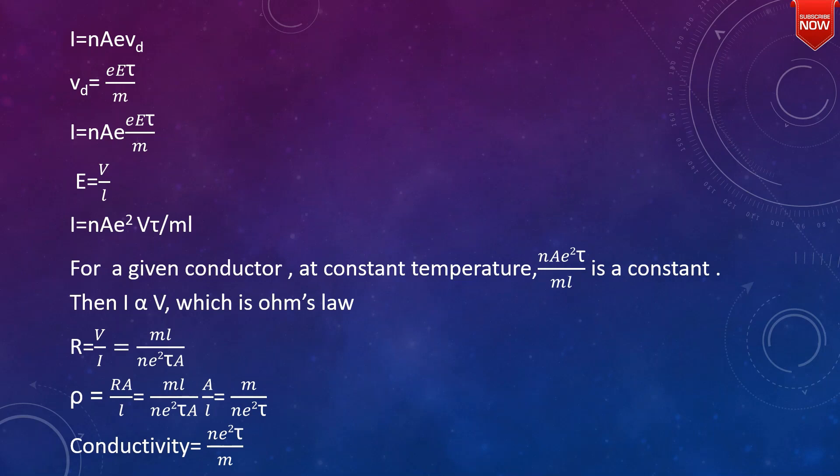The current is given by i = nAevd. Substituting vd = eEτ/m, we get i = nAe × (eEτ/m).